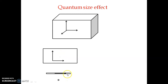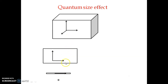If we consider a quantum wire, two dimensions are reduced to nanoscale, so the electron is free to move in only one direction. And in a quantum dot, all three dimensions are reduced to nanoscale, so it cannot move in any direction. As we decrease the size, the degree of freedom keeps reducing, which puts a limit on the motion of the electron.